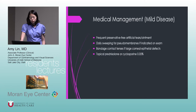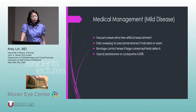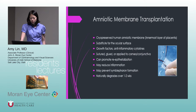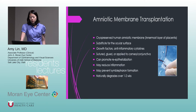For mild disease, medical management includes frequent preservative-free artificial tears and ointment. Depending on how the eye looks, consider sweeping the fornices for pseudomembranes — I use a cotton tip applicator. For large corneal epithelial defects, place a bandage contact lens. Use topical prednisolone and/or Restasis. For more severe disease, urgent amniotic membrane transplantation is recommended.